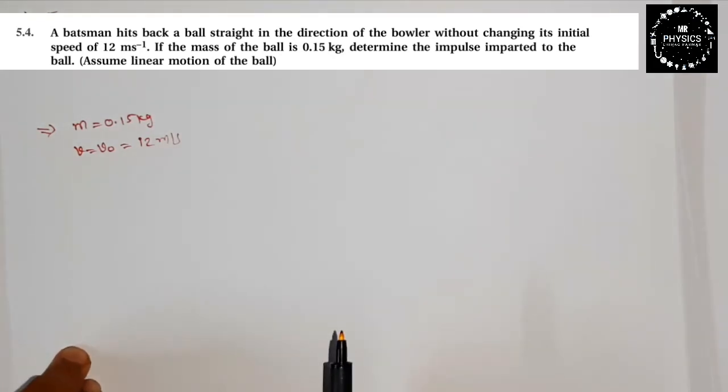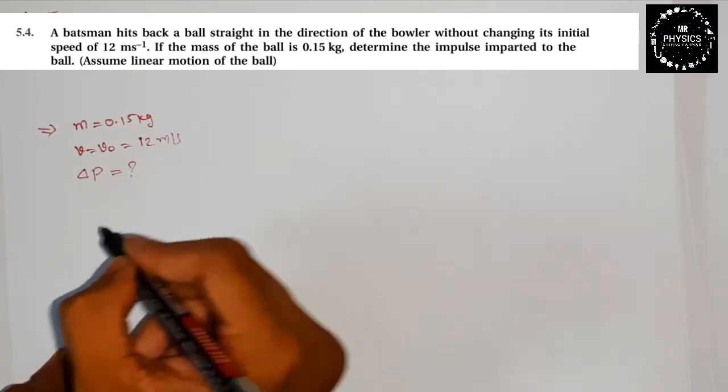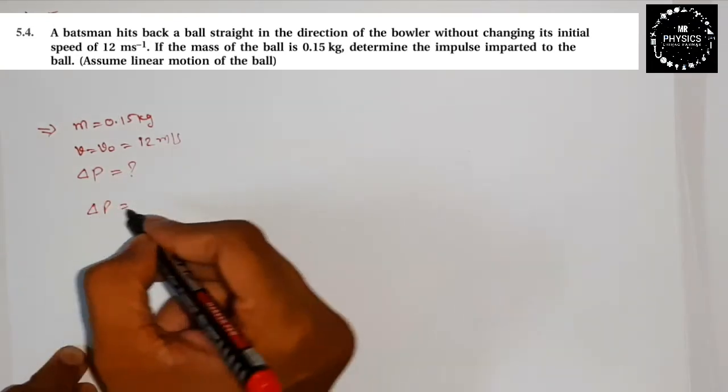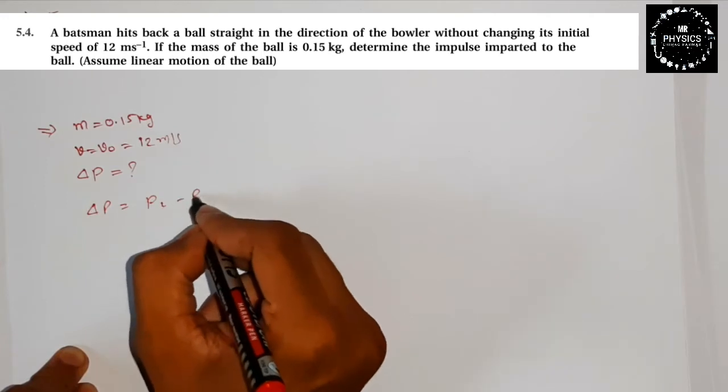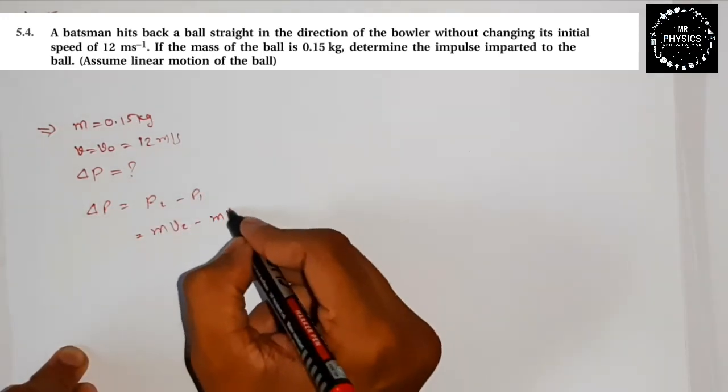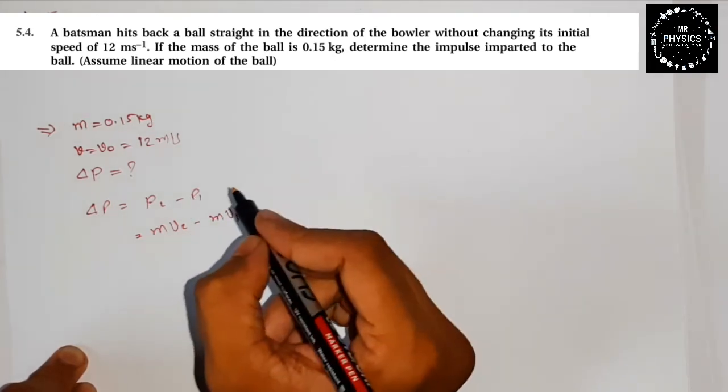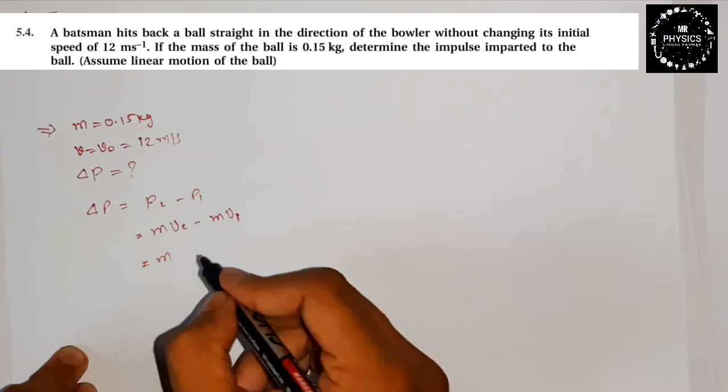Impulse of force is defined as delta p. Delta p equals what? p2 minus p1, which means mv2 minus mv1. For the initial speed, we'll substitute the initial value here.